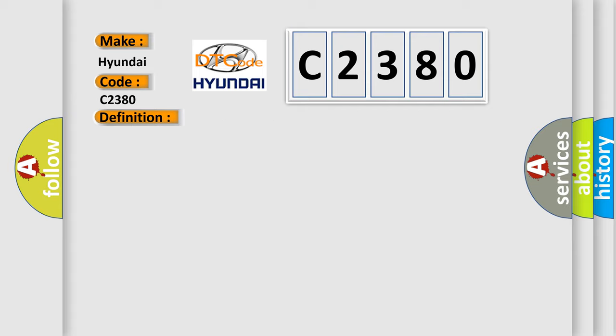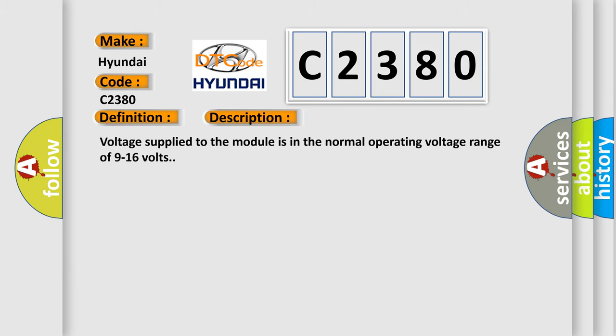And now this is a short description of this DTC code. Voltage supplied to the module is in the normal operating voltage range of 9 to 16 volts.